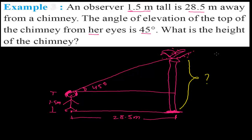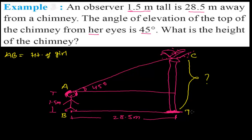Now we have all the information, we have pictured it, and we need to find out the height. Let me name the diagram properly. Suppose AB is the girl — AB is the height of the girl. And CD is the height of the chimney.